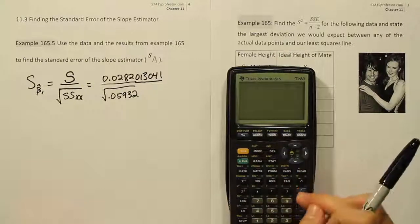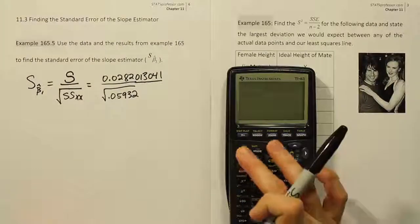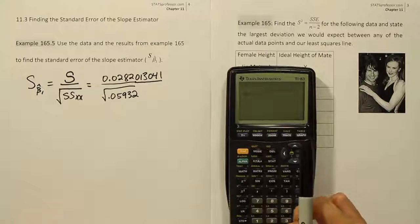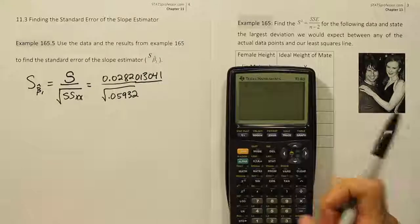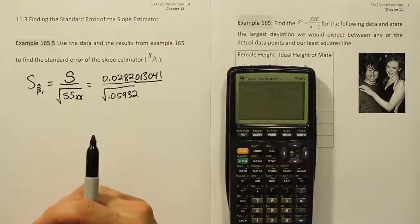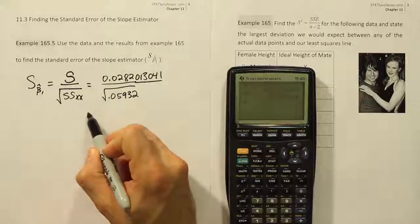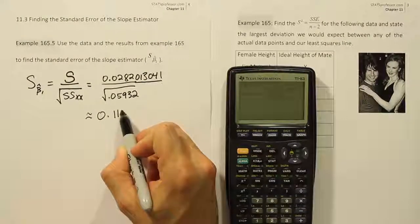So I'm going to divide by the square root of .05932 and when I close it up and hit enter I get the answer .115789 so approximately 0.1158.